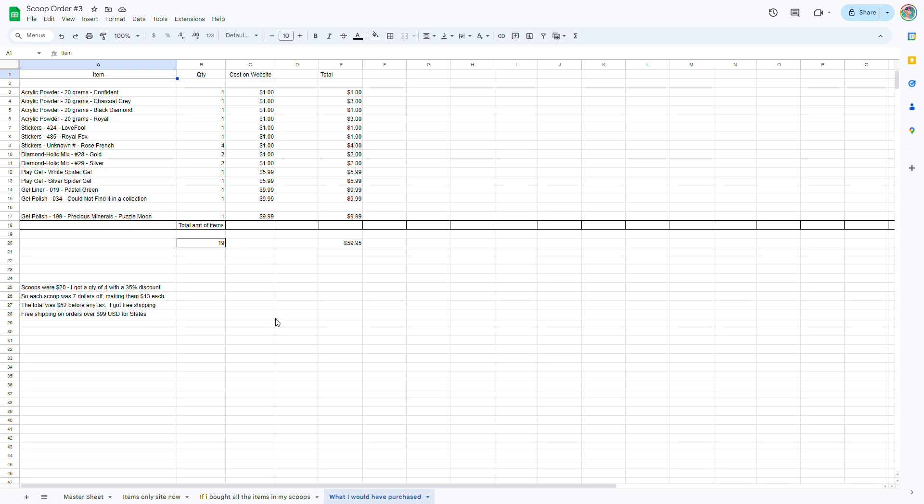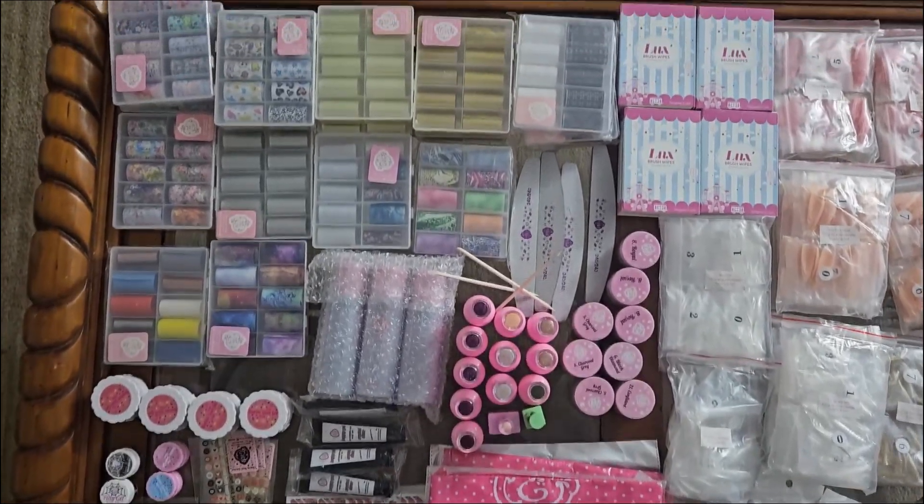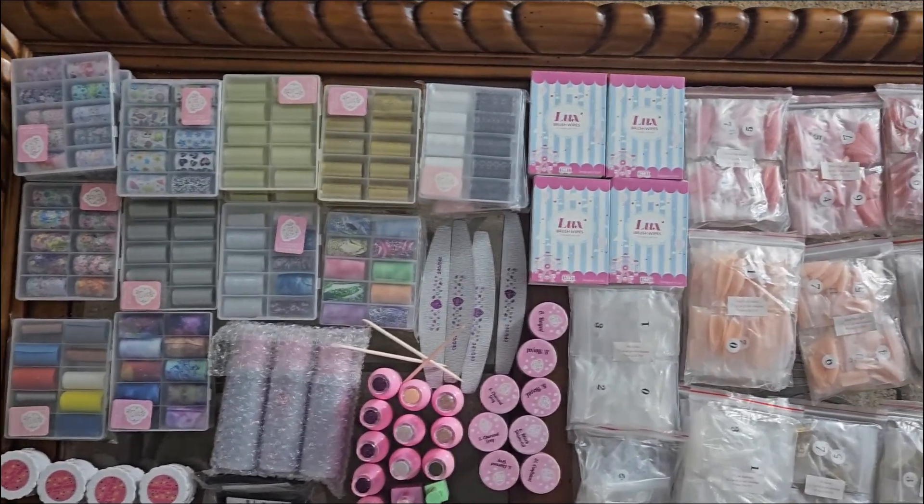So in conclusion, my scoop haul has proven to be a delightful investment with only a couple minor disappointments. The dustproof aprons were really the only thing I was kind of upset about. Upset's a strong word. They were items that I definitely would have been okay with if they weren't in the scoop box. But with that being said, there's 19 items I would have purchased anyway. The value speaks for itself.